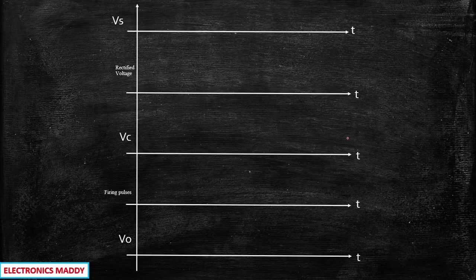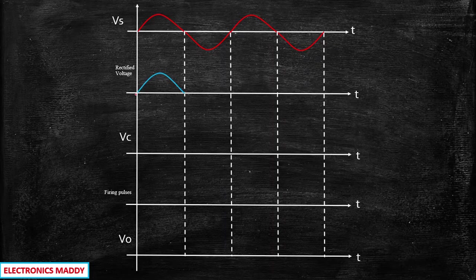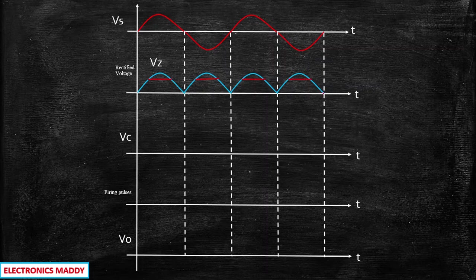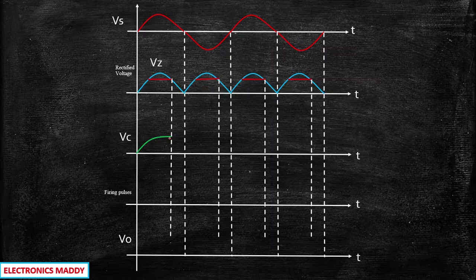Now let us look at the waveforms and understand the working in detail. We have a sinusoidal voltage source — let us consider two cycles of it. The rectified voltage comes from the full bridge rectifier circuit, and the uncontrolled rectifier produces output in this particular fashion. Once we get this, the voltage is clamped with the help of the Zener diode voltage regulator, producing a clamped waveform. The capacitor voltage during the positive half cycle starts charging to a specific peak value VP.